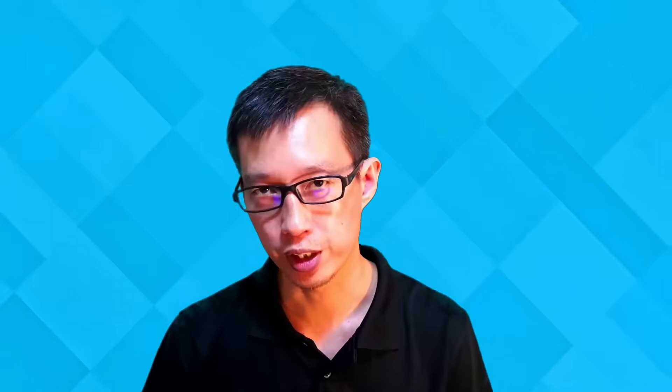Say for example you bought a bond at $950 and this bond had a maturity value of $1000. How do you calculate the yield of this bond? The yield is basically calculating as a percentage what is the benefit to you for lending that money for a period of time. The first way of calculating yield is based on the amount of money you have invested. You spent $950 and the benefit you get is $50 in interest. So your investment yield will be $50 divided by $950, giving you 5.26%.